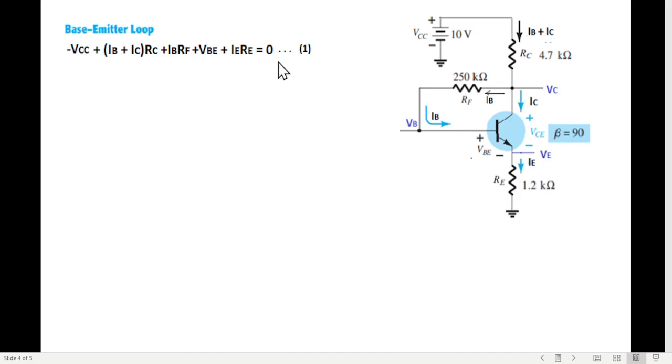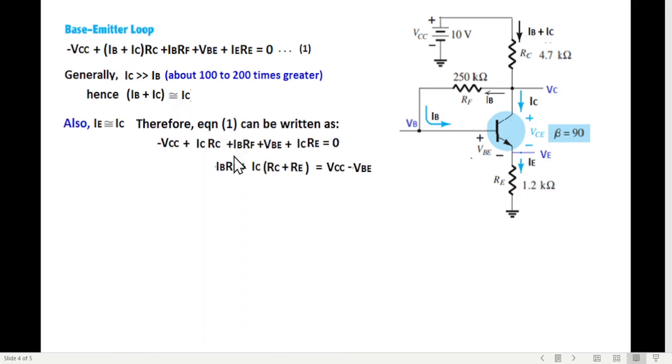Now we'll do some simplification. We should eliminate all other things except for IB. So how do we do? First is, if you see in this case, IC is much, much greater than IB. About 100 to 200 times. And therefore we can neglect IB. So IB plus IC can be written as IC. That is one assumption. So another one is that IE is approximately IC. Now this current IC is approximately equal to IE. Although in IE, IB is included. But as we said, that IB is very small. Therefore, IE is approximated at IC.